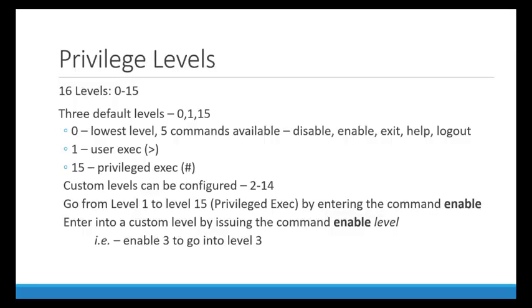We're going to spend some time talking about privilege levels. Privilege levels are a way for you to provide CLI or IOS access to only certain commands. There are 16 levels, 0 to 15. There are three default levels: 0, 1, and 15.